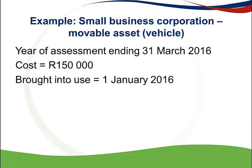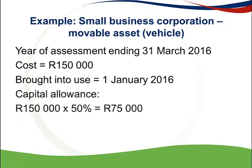Looking at an example of a small business corporation that acquired a vehicle in the 2016 year of assessment, brought it into use on 1 January 2016, with a cost of 150,000. Because this is a movable asset of a small business corporation, I will utilise the 50/30/20% allowance. Since the asset is brought into use in the current year of assessment, I will claim the 50% allowance: 150,000 times 50% gives a deduction of 75,000.